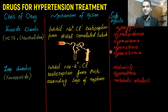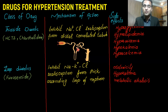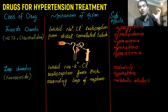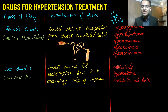Loop diuretics include furosemide. They inhibit a channel present in the thick ascending loop of the nephron, blocking sodium, potassium, and chloride reabsorption. When these electrolytes are lost in urine, water follows, and water and salt are lost, resulting in lower blood pressure. However, loop diuretics have the side effects of ototoxicity, hypokalemia, and metabolic alkalosis.